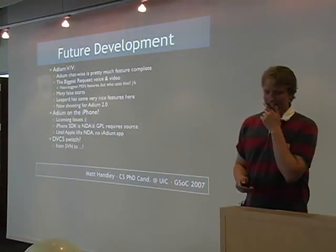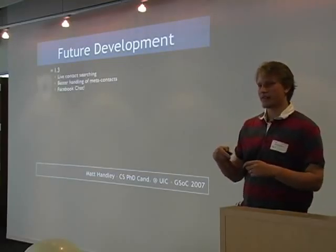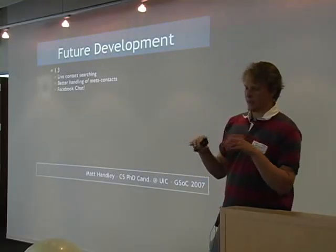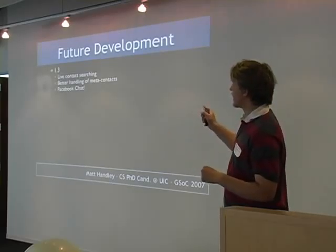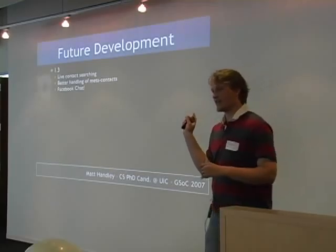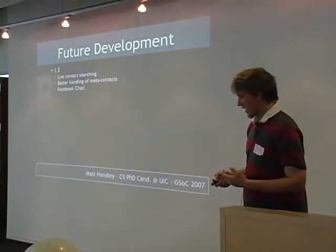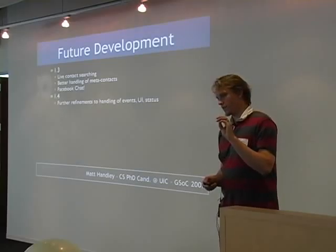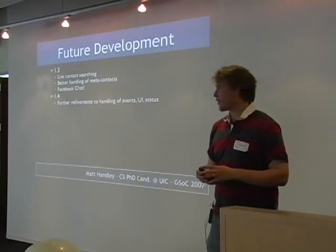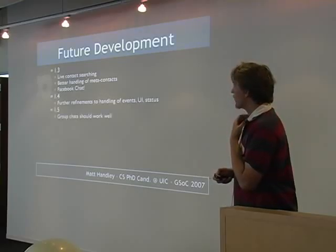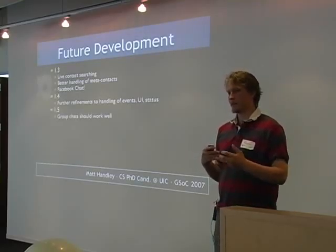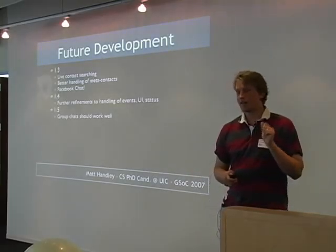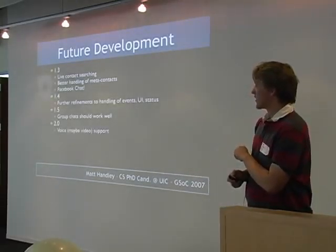We're currently at version 1.2.5 or 1.2.6. Version 1.3 will have better contacts — one contact for multiple protocols — and better live contact searching. It will also include Facebook chat. Version 1.4 will focus on handling certain events and status changes. Version 1.5 will improve group chatting, which people find really awkward to use right now. And finally, version 2.0 should have voice and maybe video support.